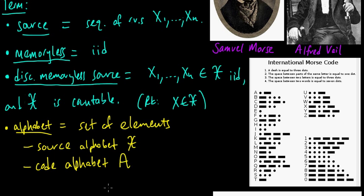And then we're also going to have a code alphabet, and I'll probably fairly consistently denote this by this script A. For example, in Morse code here, the source alphabet would be all the letters A through Z and all the numerals zero through nine. The code alphabet - I think that a good way to think about Morse code is as a sequence of zeros and ones, so in that case the code alphabet would be zero and one.